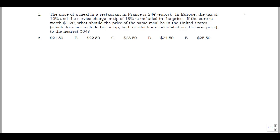So this is question one from the spring 2015 Amatic student math league contest. The question is, the price of a meal in a restaurant in France is 24 euros. In Europe, the tax of 10% and the service charge or tip of 18% is included in the price. If the euro is worth a dollar and 20 cents, what should the price of the same meal be in the United States, which doesn't include tax or tip, both of which are calculated on the base price, to the nearest 50 cents?